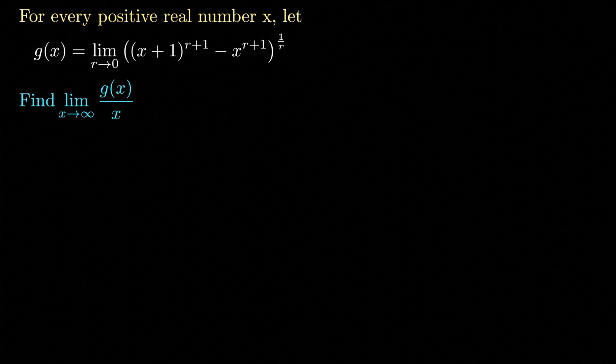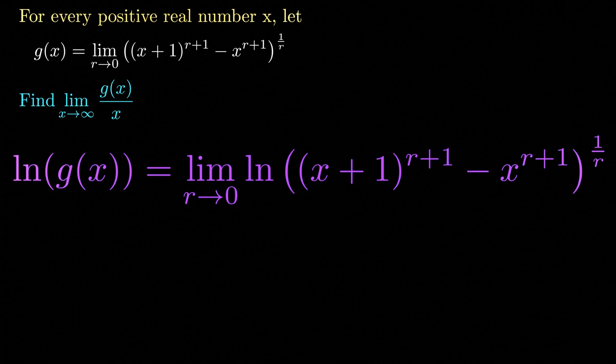We have g of x equal to the limit as r approaches 0 of x plus 1 raised to r plus 1, minus x raised to r plus 1, all raised to 1 over r. The first thing we're going to do is take the natural logarithm of both sides of that equation.